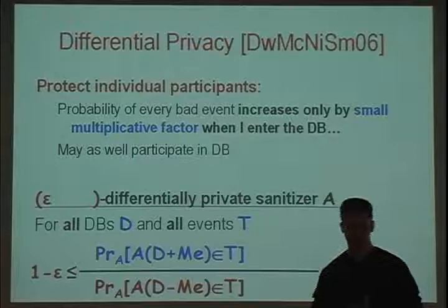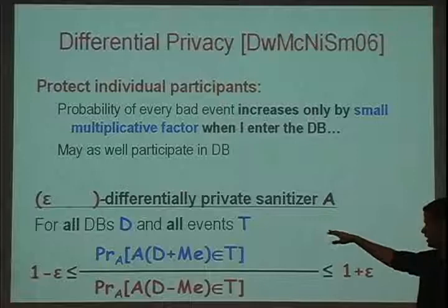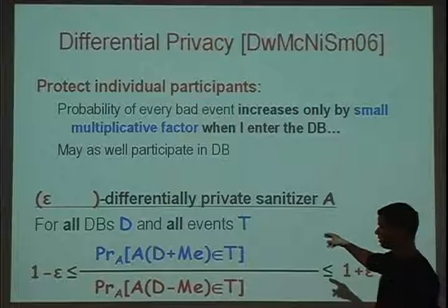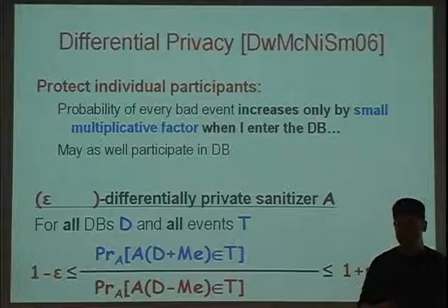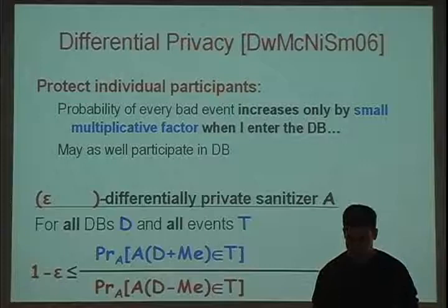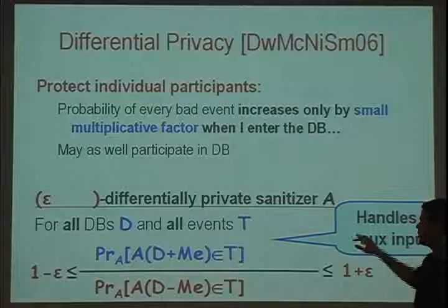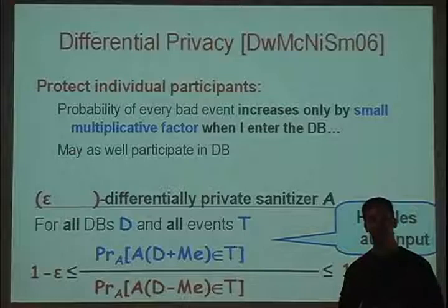More formally: we say a sanitizing mechanism is epsilon-differentially private if for any database, any values of the other users, and any event — think of this as a bad event — the probability the event happens when I'm in the database, divided by its probability when I'm not in the database, is between e^(-epsilon) and e^(epsilon). Bad events increase in probability only by a (1+epsilon) multiplicative factor when I enter the database. This definition handles auxiliary information: since we're quantifying over any possible bad event, auxiliary information technically goes into the event and is handled.